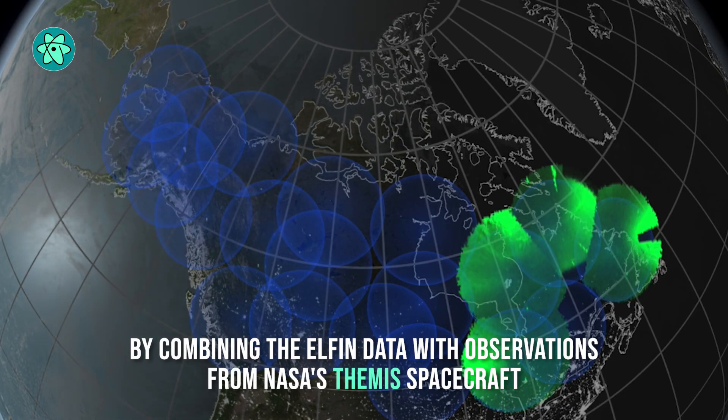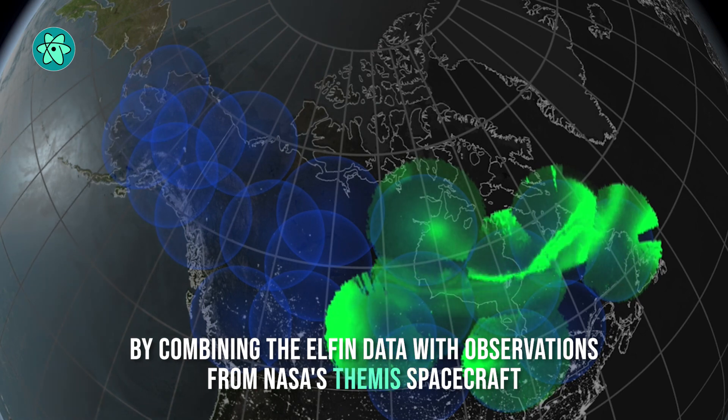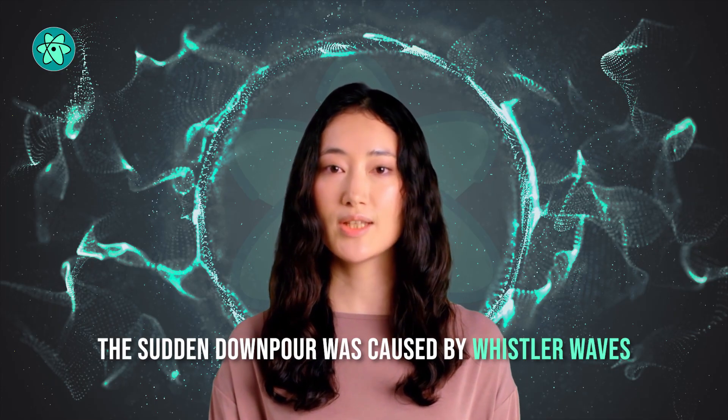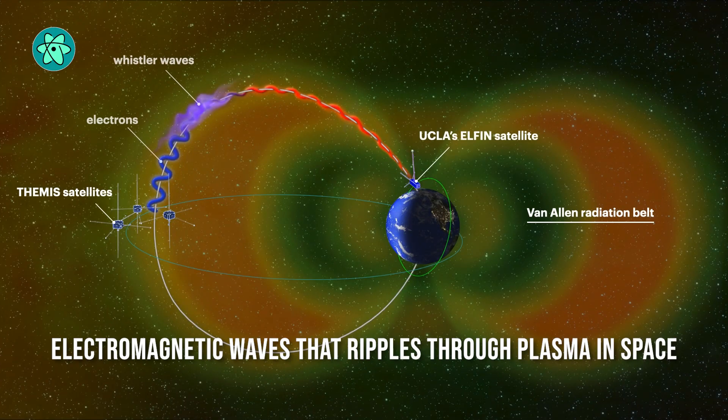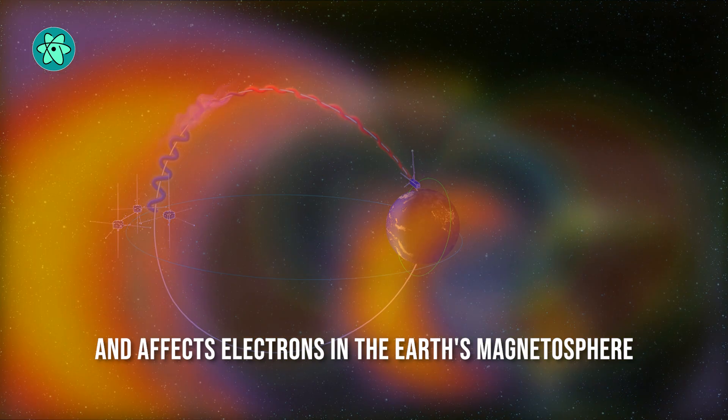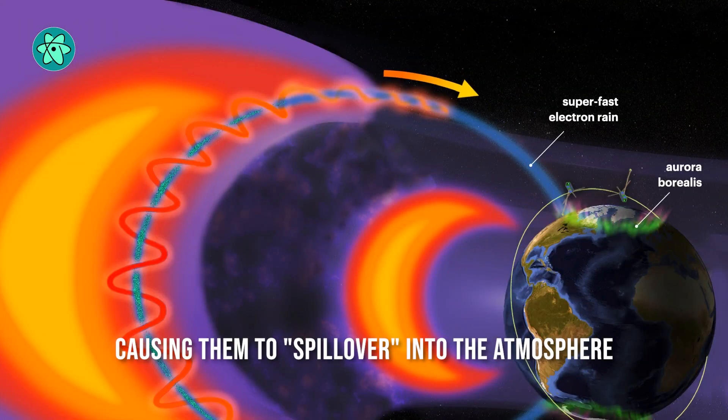By combining the ELFIN data with observations from NASA's THEMIS spacecraft, the scientists determined that the sudden downpour was caused by Whistler waves. These are a type of electromagnetic wave that ripples through plasma in space and affects electrons in the Earth's magnetosphere, causing them to spill over into the atmosphere.